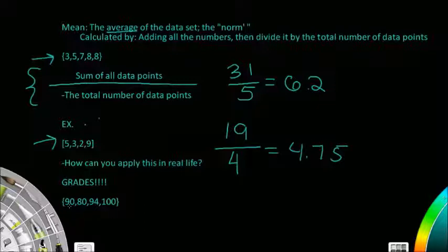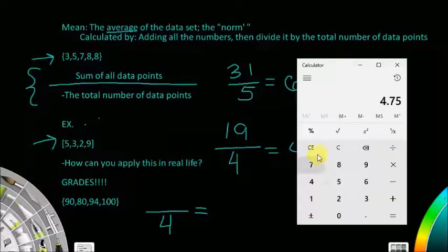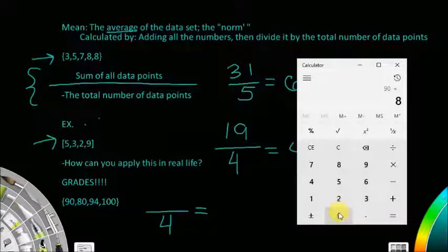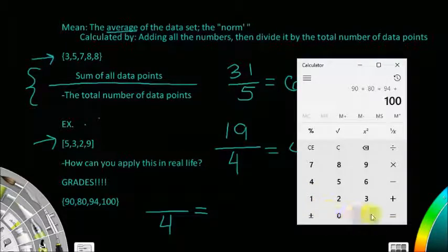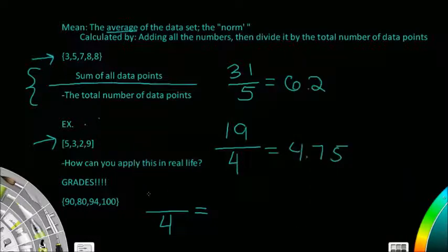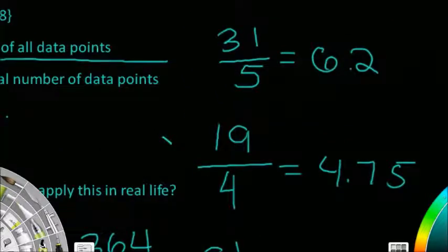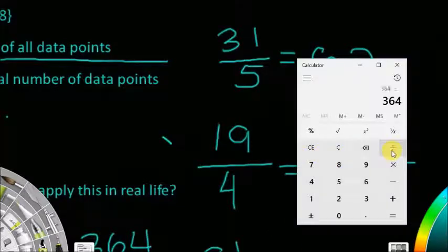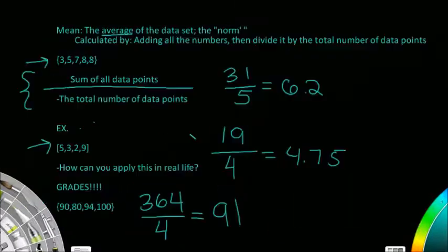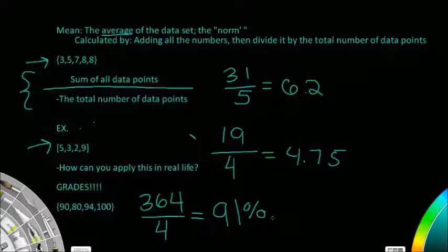So what would your final grade be? There are four grades total. Add them all together: 90 plus 80 plus 94 plus 100 equals 364. Then 364 divided by 4 equals 91. So your grade for the quarter would be 91. This is really helpful in normal life.